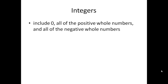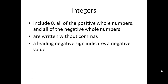First we will see integers. Integers, as you have already learned in mathematics, include zero, all positive whole numbers, and all negative whole numbers. Integer literals in Python are written without commas — there won't be any commas. A leading negative sign indicates a negative value.